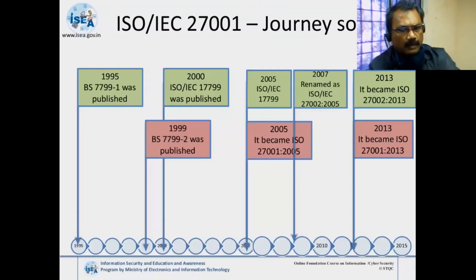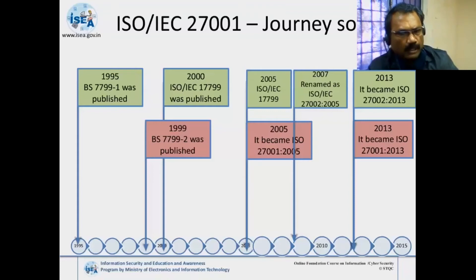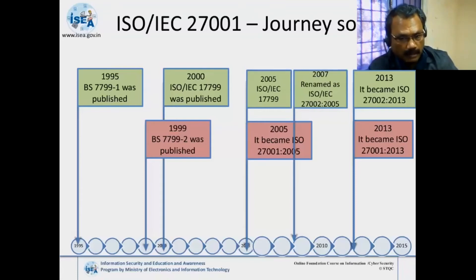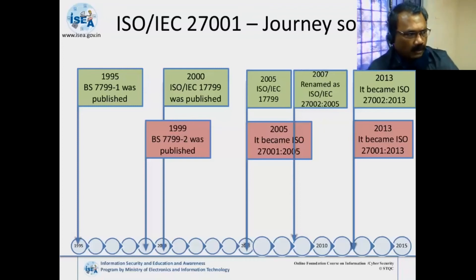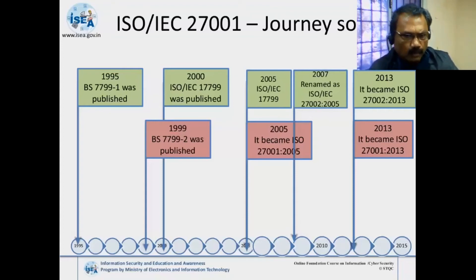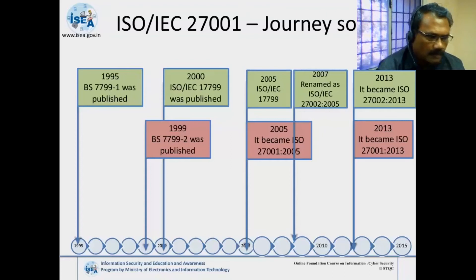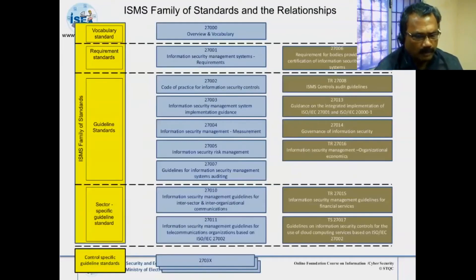ISO 27002 is a code of practice which gives you the domains you need to concentrate on if you want to go for certification. It gives you control objectives — there are 33 control objectives mentioned in 27002 — and 114 controls. So to summarize: 27001 gives you the requirements for ISMS, and 27002 tells you how to meet those requirements through security control objectives and controls.